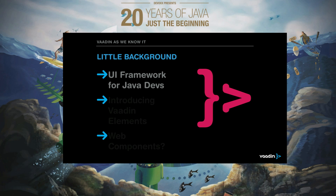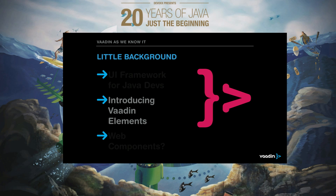This is a framework that we used to know, but today I'm more interested to talk about something new: Vaadin Elements — a set of web components to port our amazing UI components into something new, to build modern web applications using our web components.